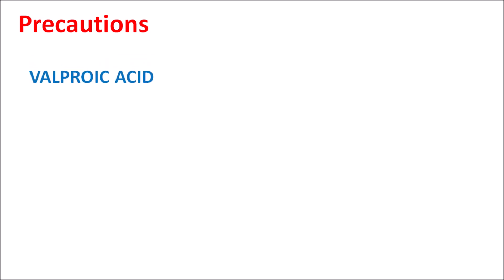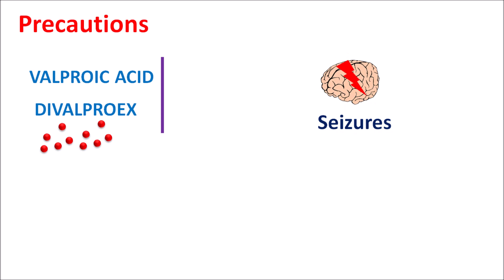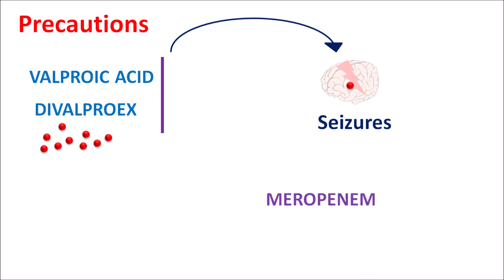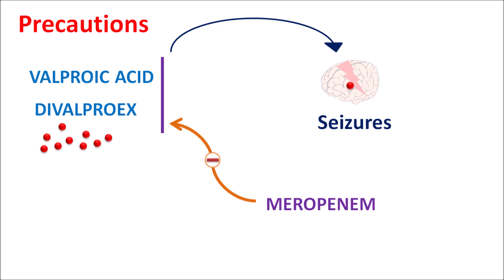Valproic acid and divalproex are anti-epileptic agents used to control seizures. When these drugs are combined with meropenem, a drug interaction exists: meropenem reduces the levels of valproic acid and divalproex, decreasing their anti-epileptic activity and increasing the risk of seizure induction. Therefore, meropenem should not be combined with valproic acid or divalproex; if needed, another antibacterial agent should be used.